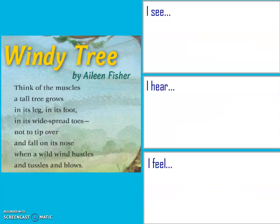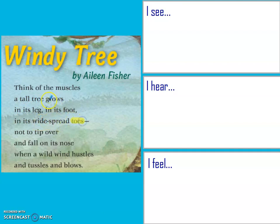We're going to do one more. If you want to pause and try this one on your own, go ahead and try it, then come back and listen to my explanation. This one has a little bit of rhyming in it. It's The Windy Tree by Eileen Fisher: 'Think of the muscles a tall tree grows in its leg, in its foot, in its widespread toes, not to tip over and fall on its nose when a wild wind hustles and tussles and blows.'